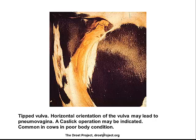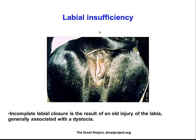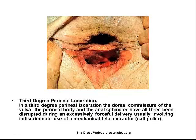This is a conformational problem in a cow in poor body condition, where you get a sunken anus and cranial displacement of the vulva — the sort of thing we see in horses a lot but occasionally in cows with poor body condition. This cow probably had a traumatic injury from a previous birth, resulting in incompetence of the vulval seal. Third degree perineal laceration associated with a previous calving injury is also seen occasionally, though not very common in the cow.